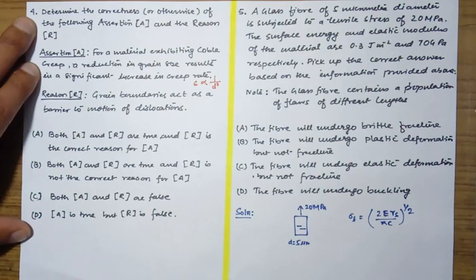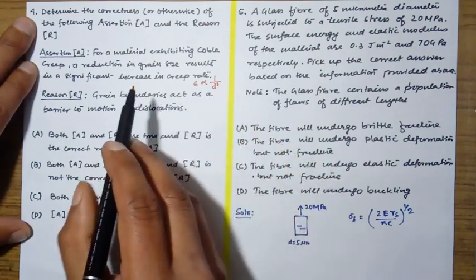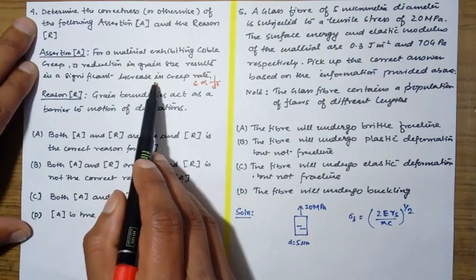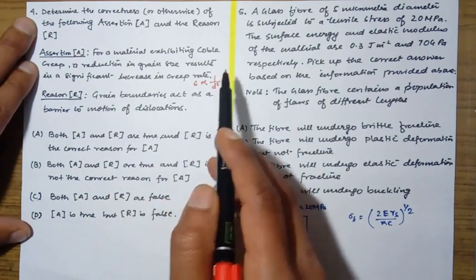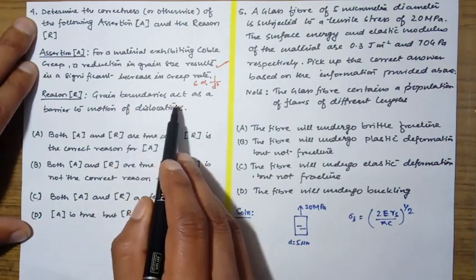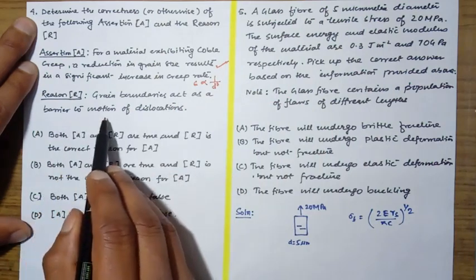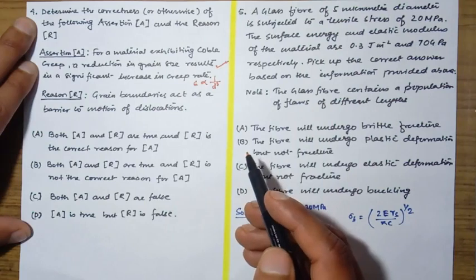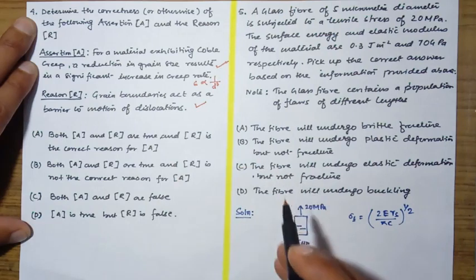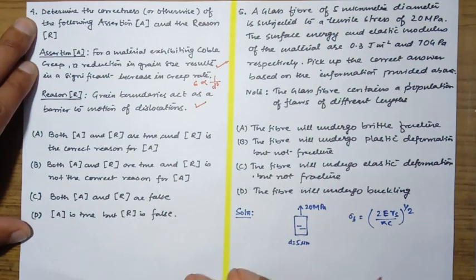If we decrease the grain size, reduction in grain size results in significant increase in creep rate, so it is absolutely correct. Now, grain boundaries act as a barrier to motion of dislocation. This statement is also absolutely correct because grain boundaries help in strengthening at lower temperature.